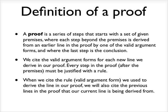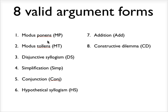Okay, so a proof is just a series of steps that starts with a given premise or premises, where each step beyond the premises is derived from an earlier line in the proof by one of the valid argument forms, and where the last step is the conclusion.